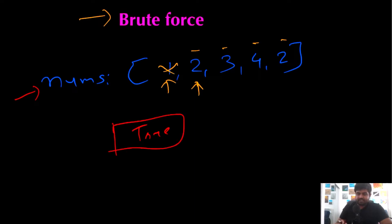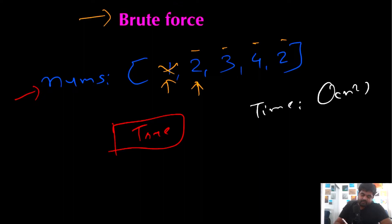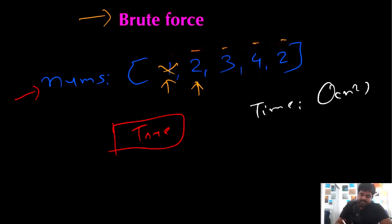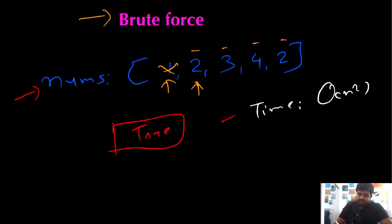This brute force solution works as expected, but if we look at the time and space complexity, the time complexity is going to be O(n²). Why n²? Because for every single element we have to compare all the other remaining elements, and we repeat this for all elements, making the time complexity O(n²). So let's see how we can improve upon that.